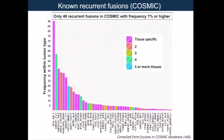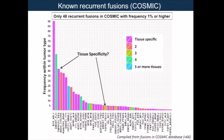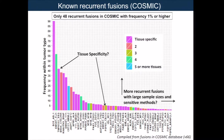COSMIC maintains a database of known fusion genes. Less than 10 percent of them should have a frequency of greater than 1 percent, which is kind of interesting. If you look at the tissue specificity of some of these known recurrent fusion genes, for example, TMPRSS2 is very prostate cancer specific, and some of the fusions like the FGFR3 tag are seen across multiple different tissue types. There are future directions around how this distribution will change with larger sample sizes and more sensitive methods to detect fusions.